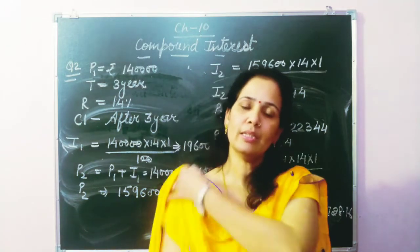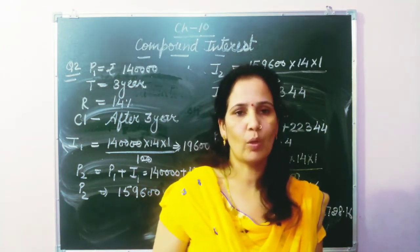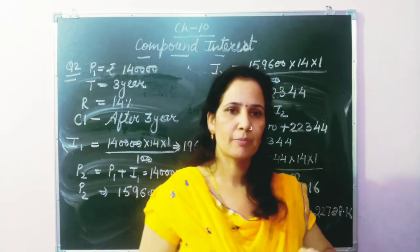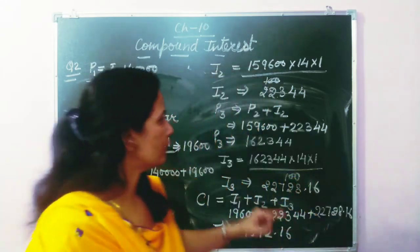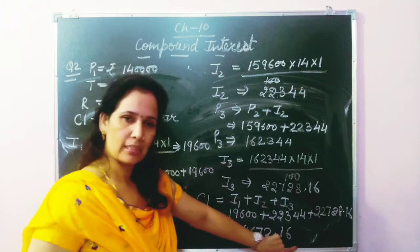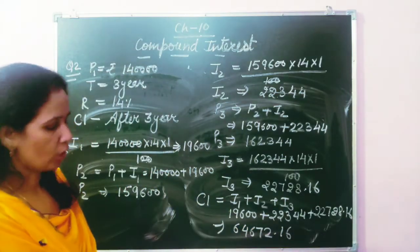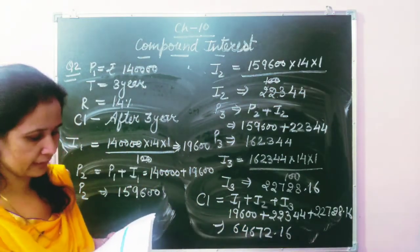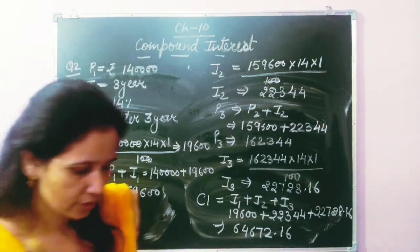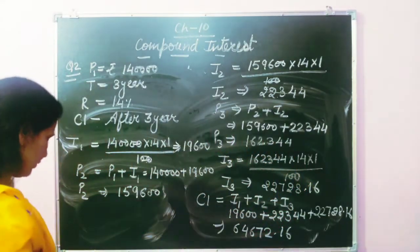We found the interest annually after each year, added the interest to the principal each time, then calculated the next year's interest. We have now done Question 2. Let's discuss Question 3, which is of the same type.